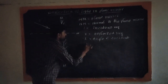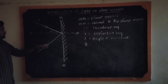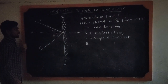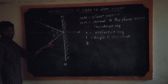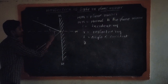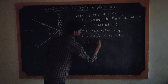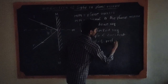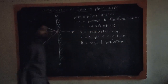What is the angle of reflection? The angle between the normal and the reflected ray is called the angle of reflection. This is the angle of reflection.